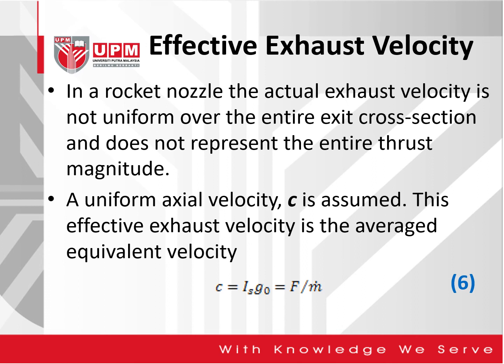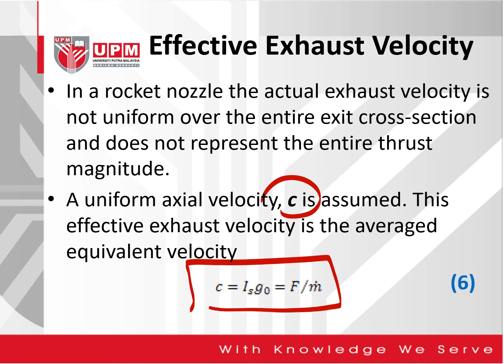If you imagine a nozzle with a given diameter, it will not have a uniform actual exhaust velocity and does not represent the entire thrust magnitude. Therefore, we use a uniform axial velocity C, which is assumed as the effective exhaust velocity — the average equivalent velocity.